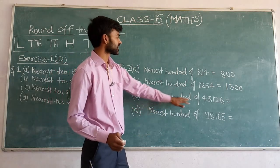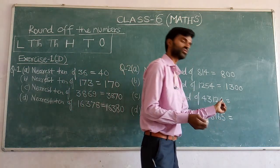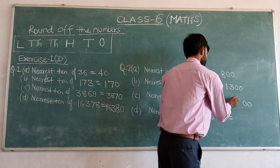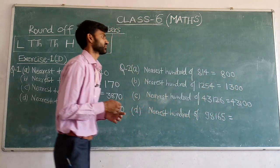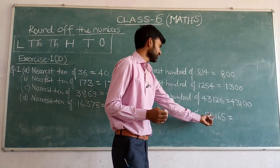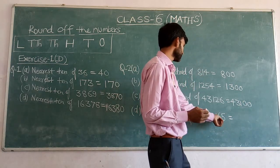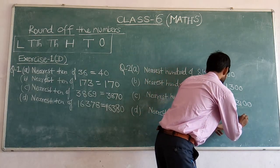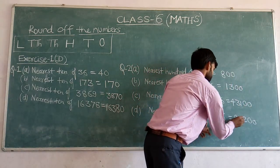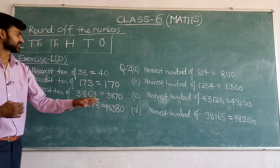The nearest 100 of 43120: check the tens digit — it is 2, which is less than 5. So replace the tens and ones digits by 0 and keep the other digits. The nearest 100 of 43120 is 43100. For 8165: the tens digit is 6, which is greater than 5. So increase the hundreds digit by 1, and replace all digits to the right by 0. The nearest 100 of 8165 is 8200.